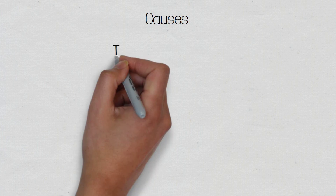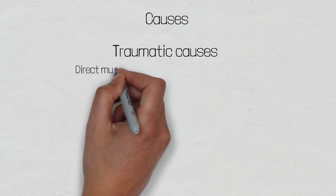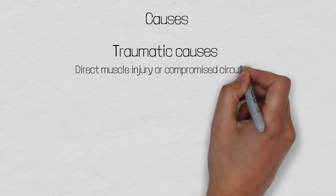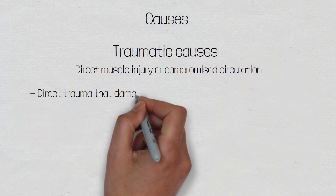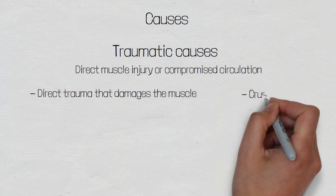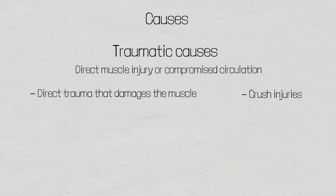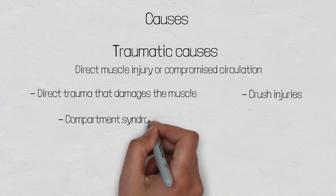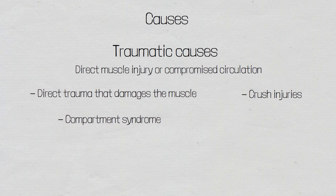Rhabdomyolysis can have such a varied presentation. Traumatic causes are those that may cause direct muscle injury or compromised circulation, and these include direct trauma such as blunt or penetrating trauma, which directly injures the muscle cells. Crush injuries, which prevent the supply of oxygen and glucose to muscle cells. Compartment syndrome, which will also prevent the supply of nutrients to the muscle cells. Surgery, which will directly damage muscle cells. Immobilisation, which can be thought of a bit like a crush injury, where the patient's own body weight is crushing the muscle tissue, which inhibits oxygen and nutrients entering the muscle, causing muscle death. It's important to think about your elderly patients who may have fallen and spent a prolonged time on the floor.